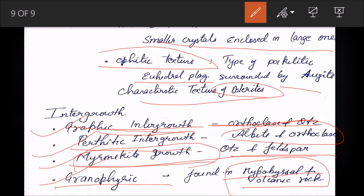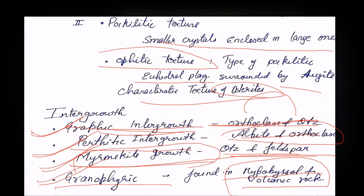When making notes, highlight the points you need to keep revising. Once you've gone through your notes once or twice, the third time it won't take more than a minute to revise a topic. You can even convert the video to MP3 and listen to it. To recap: graphic texture = orthoclase and quartz; perthitic texture = albite and orthoclase; myrmekitic texture = quartz and feldspar.